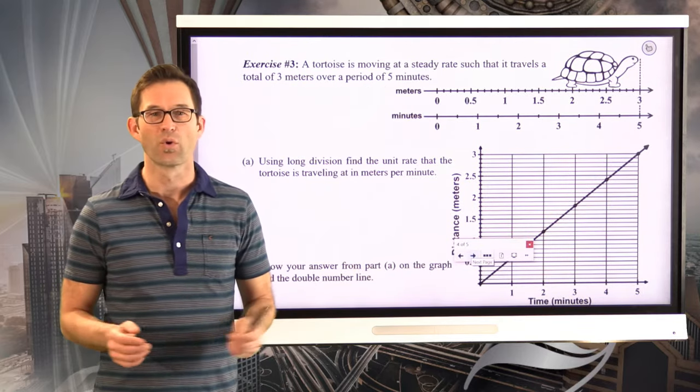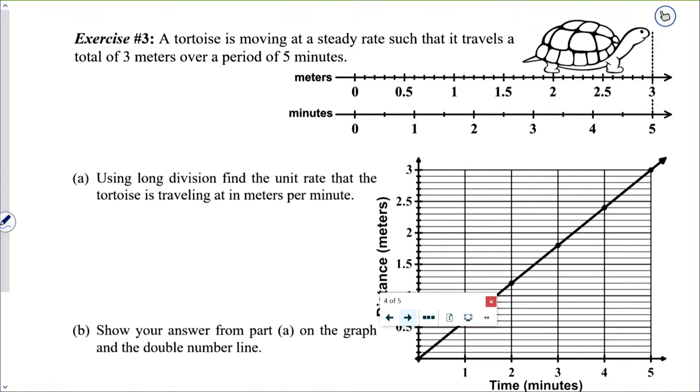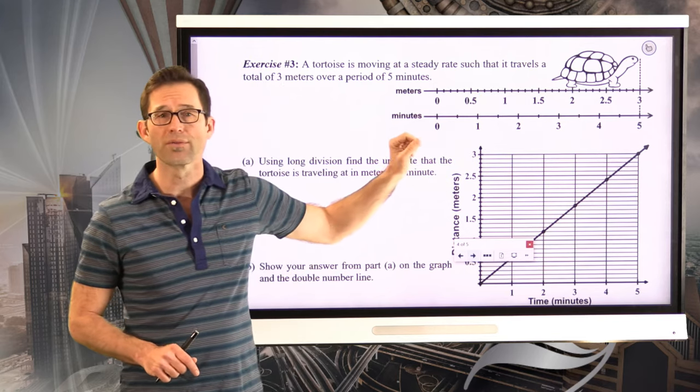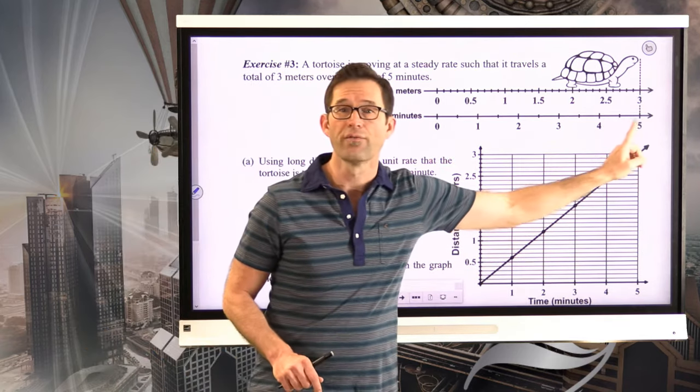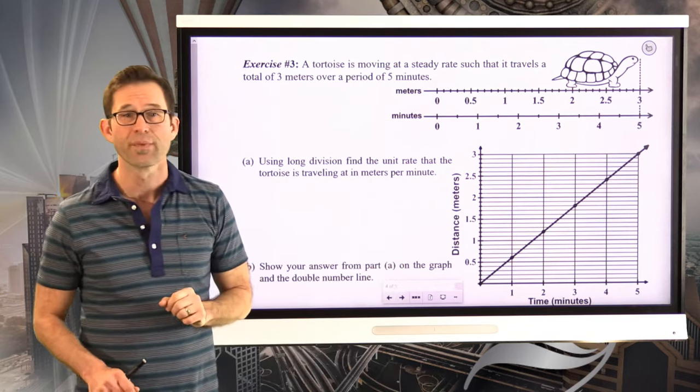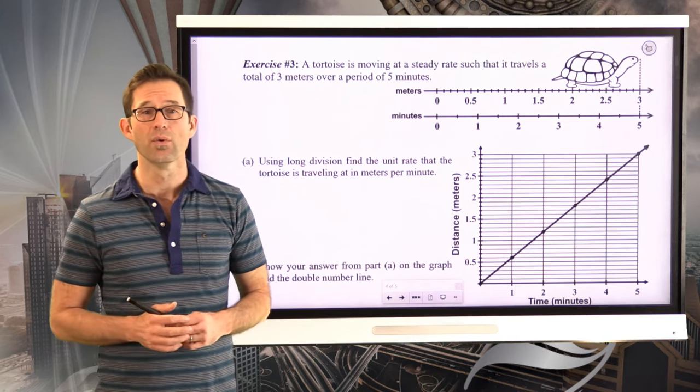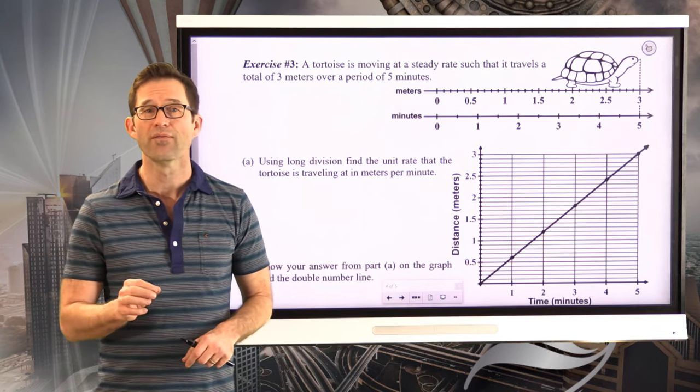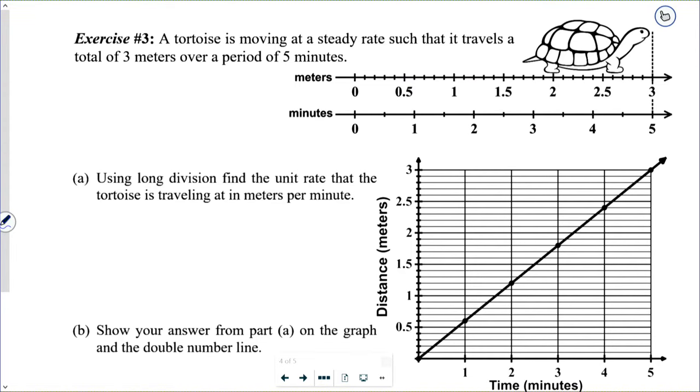What do we have next? A tortoise, otherwise known as a turtle. Or maybe they're not the same thing. Anyway, exercise number three. A tortoise is moving at a steady rate such that it travels a total of three meters over a period of five minutes. Tortoises are very slow, as we all know. And we can see this on this double number line. We can use double number lines to help us think about proportional variables or think about ratios. So what we can see is this idea that after five minutes the tortoise is at a distance of three meters. Let's take a look at letter A. Using long division, find the unit rate that the tortoise is traveling at in meters per minute. This one's a little bit trickier, and you definitely have to use long division to do it if you don't have a calculator. Why don't you go ahead, set up this problem, and figure out the unit rate in meters per minute that the tortoise is traveling.